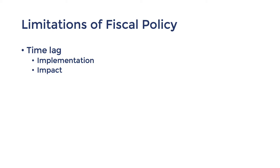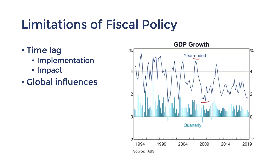The effectiveness of fiscal policy can also be limited by global influences, especially with expansionary stances. An example would be the expansionary fiscal policy used during the GFC in 2008 to 2010. Some estimations suggest that the fiscal stimulus boosted Australia's real GDP by 2.75% in 2008-2009 and 1.5% in 2009-2010, helping to keep negative growth to only one quarter, technically avoiding a recession. On one hand, we could say that fiscal stimulus had some success, but it nonetheless shows that fluctuations in the international business cycle can affect the Australian economy despite counter-cyclical policies.